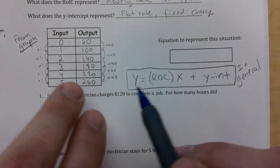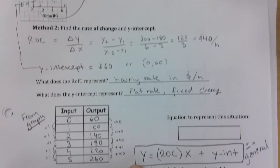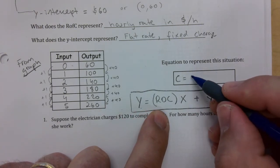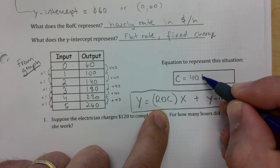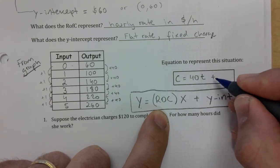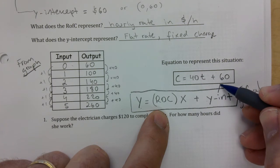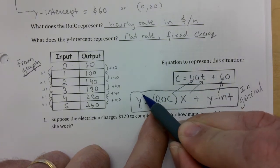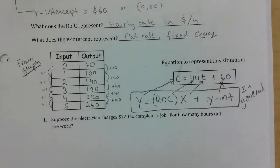Specifically for this scenario: look at your axes. The y variable is C (cost) and the x variable is T (time). So the equation is C(T) = 40T + 60. We don't put units inside the equation. The rate of change is 40, the y-intercept is 60, and this equation would have produced that graph we started with.